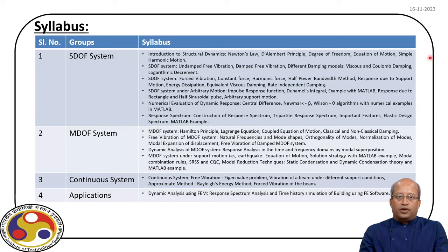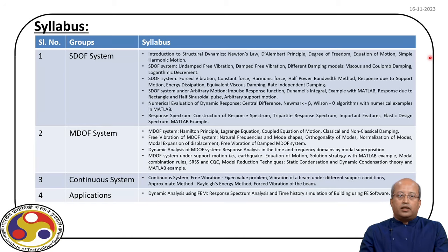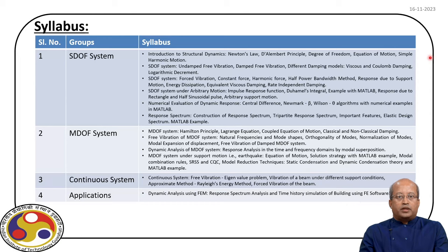This response spectrum analysis is covered in structural design in the undergraduate curriculum, but here we will see how to develop this response spectrum and what is its impact on the structural analysis. Once we cover the SDOF system, we move over to the MDOF system — that means the multi degree of freedom system. In this module, we consider the complete structure, identify all the degrees of freedom, and develop the equations of motion. When we consider multiple degrees of freedom, the equations of motion are coupled, so the matrix equation demands certain mathematical treatment through eigenanalysis. We will see the natural frequencies and mode shapes for an MDOF system and how they dictate the level of vibration.